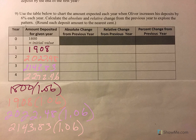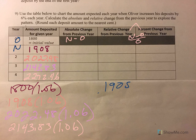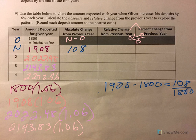Now we're off to find absolute change — new minus old — and relative change — new minus old divided by old, same concept. For year one: $1,908 minus $1,800 gives an absolute change of $108. Dividing that by the old value of $1,800 gives 6%. Go ahead and hit pause, try to fill out the rest of the table, then come back and check your work.